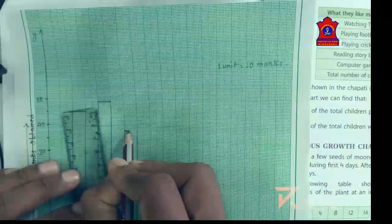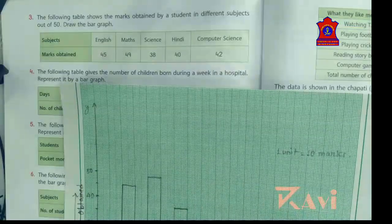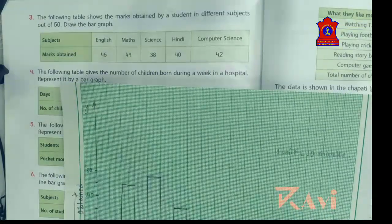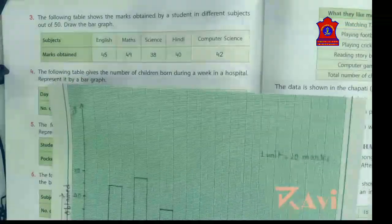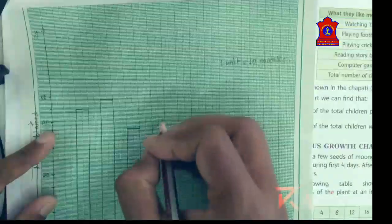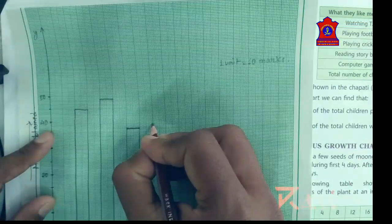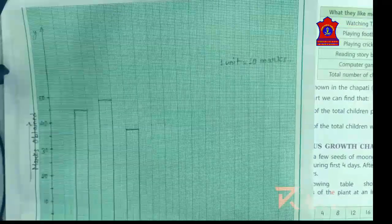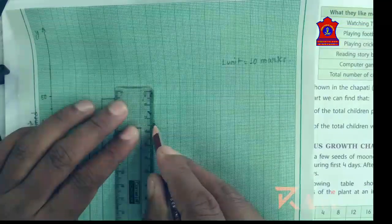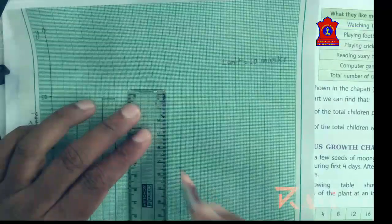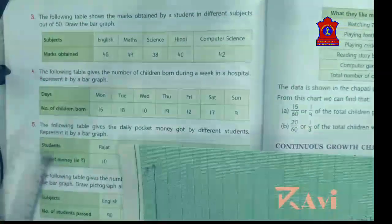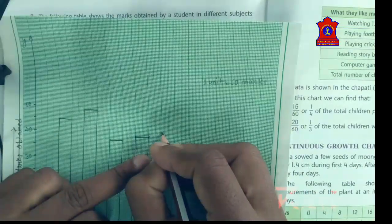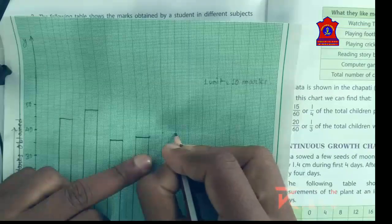The unit is very important here — you need to write the unit and heading as well. Hindi is 40 marks — I am putting dots so I can easily connect them. Next is Computer: 42 marks. 40 is here, 41, 42 — draw the bar for Computer.